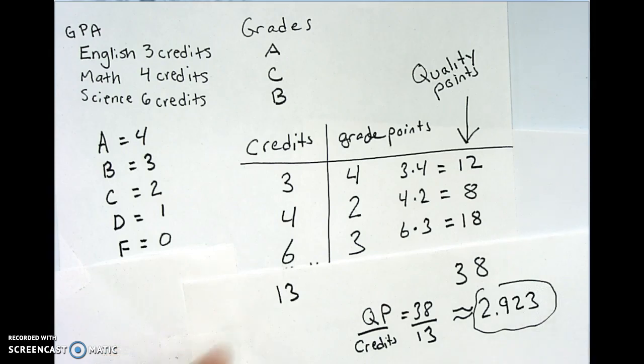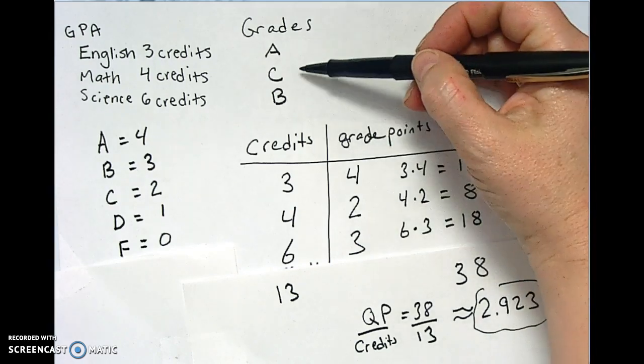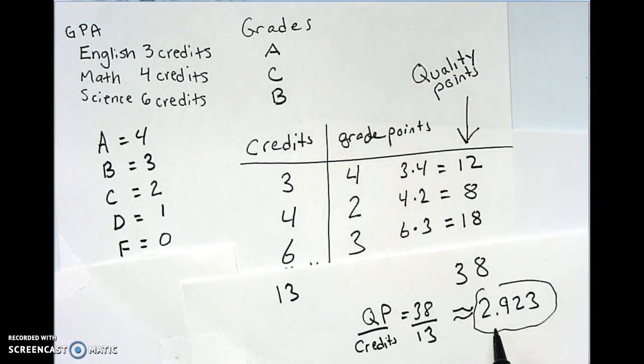Does that kind of feel right? We got an A in a three-credit class. Yay, we won an A, but then we got a C, but we got a B in a big six-credit class. So we're pretty close to a what? We're pretty close to a B. So that feels about right, right? Yeah. All right.